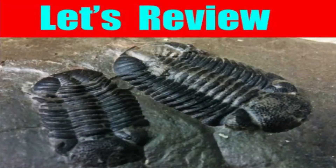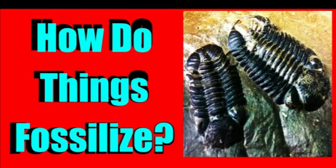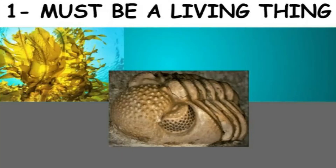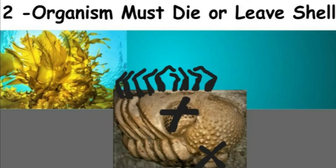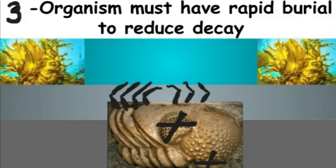Let's review how something fossilizes. First, a fossil must come from a living thing — by definition it must be a plant, animal, fungus, bacteria, or archaea — some type of living thing that leaves a trace of its existence. Second, the organism must die, or leave a shell, footprints, or some other evidence of its existence — many creatures leave shells behind but continue living. Third, for best preservation, the organism usually undergoes rapid burial, which reduces decay and creates a greater chance of fossilization.